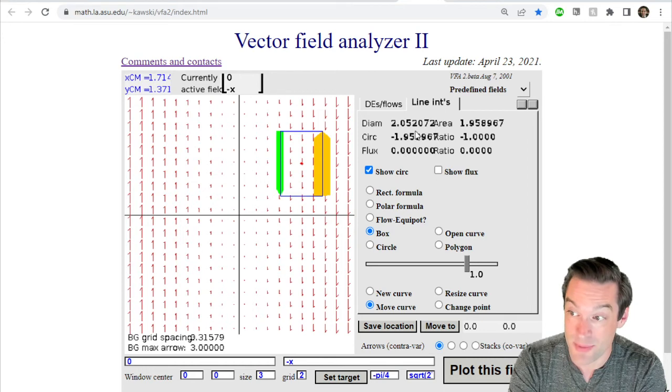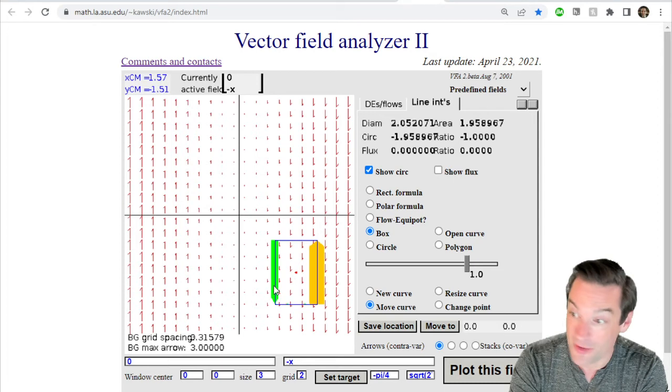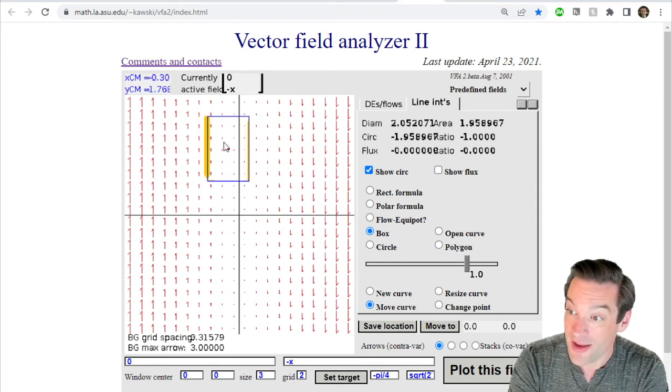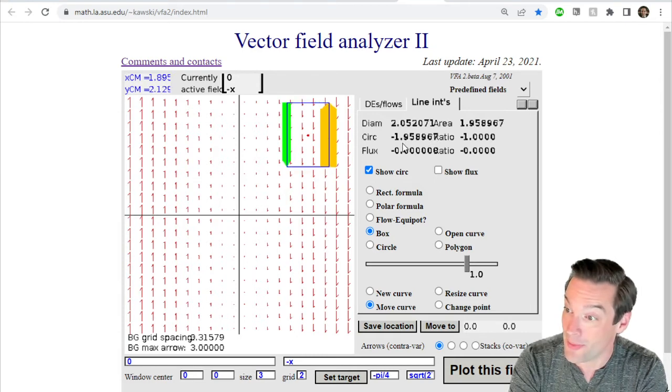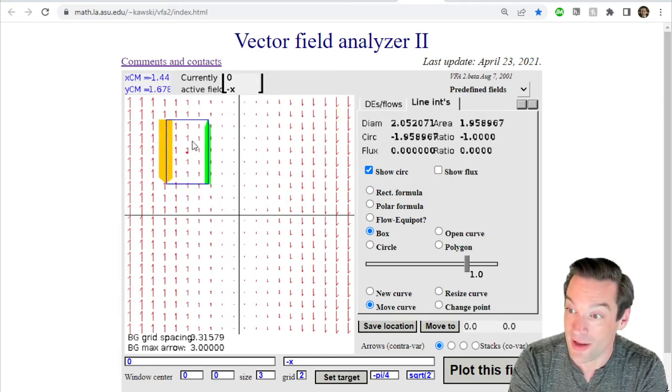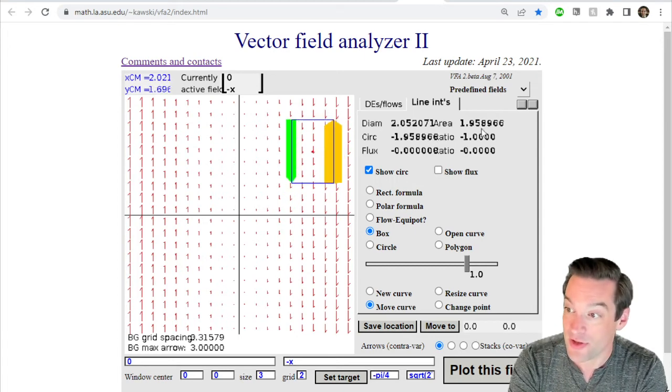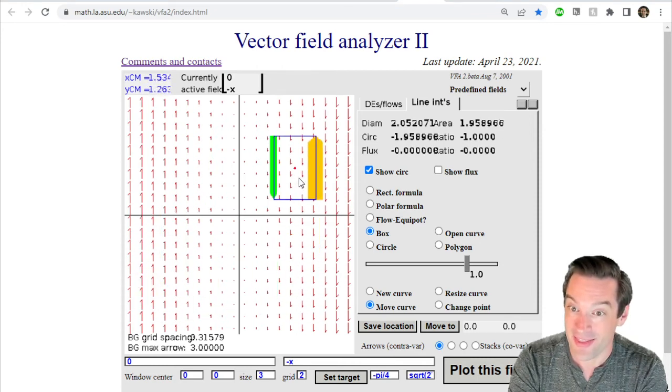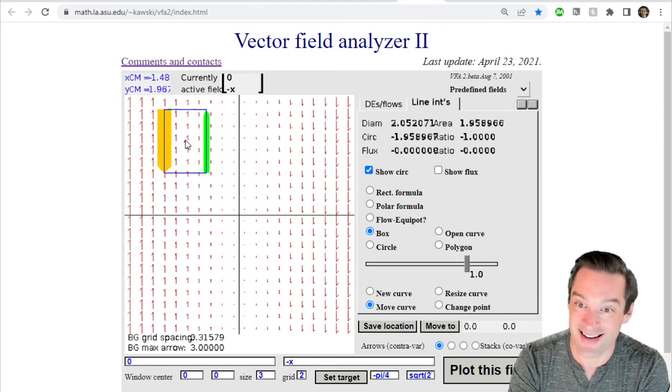So that's one interesting thing, is it doesn't seem to matter where I place this rectangle. The second interesting thing is that the value of this total circulation and the area of my rectangle seem like they are up to a sign exactly the same. My total circulation is about negative two. The area of this rectangle that I drew on here is positive two. And so the ratio of the circulation to the area is just negative one, no matter where I put this rectangle. That's the kind of thing that a mathematician probably suspects is not a coincidence, and you would be correct.